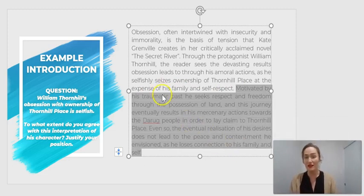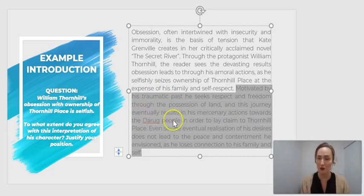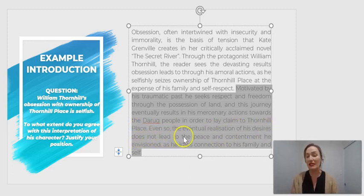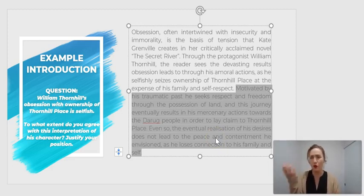Motivated by his traumatic past, he seeks respect and freedom through the possession of land, and this journey eventually results in his mercenary actions towards the Darug people in order to lay claim to Thornhill Place. Even so, the eventual realization of his desires does not lead to the peace and contentment he envisioned, as he loses connection to his family and self. So the first thing I'm going to look at is his traumatic past. The next thing is his involvement in the massacre. And then finally I'm going to say how it doesn't do what he wants. I'm looking at that last chapter sort of thing, of how it basically didn't achieve what he wanted and he's a bit confused about why, but we the reader can see he's disconnected—he's disconnected to himself and he's disconnected his family because of his actions. Okay, and so there we have a reasonably good introduction that we can expand on and really show our analysis.